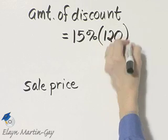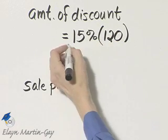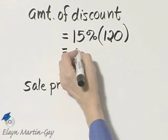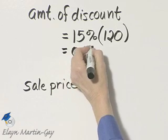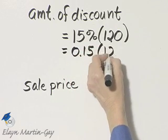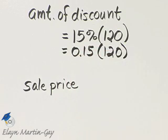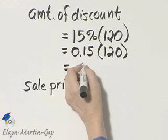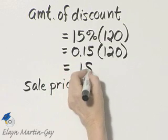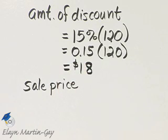Write down 120, change this percent to a decimal, and then multiply. If you do, you'll get 18, which stands for $18. The amount of discount is $18.